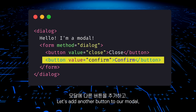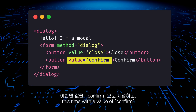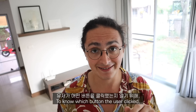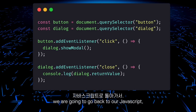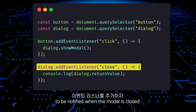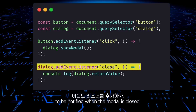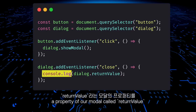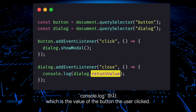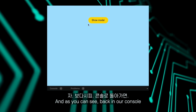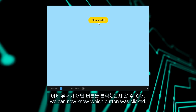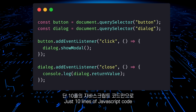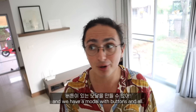Let's add another button to our modal — this time with a value of confirm — and let's give a close value to our close button as well. To know which button the user clicked, we're going to go back to our JavaScript and add an event listener to be notified when the modal is closed. Inside of the listener, we will console log a property of our modal called returnValue, which is the value of the button that the user clicked. And as you can see in our console, we can now know which button was clicked. Just 10 lines of JavaScript code, and we have a modal with buttons and all.